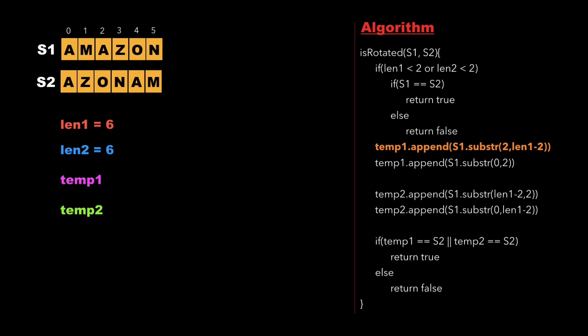Then we create a right rotation string of s1 by initially appending the substring of s1 which is from the second character up to the last character, that is we append azon, and then we also append the first two characters of s1 which are am. So we get the string azonam.